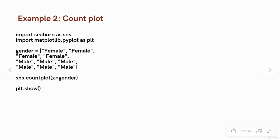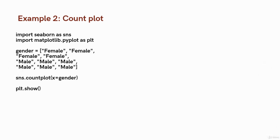If you want to produce a count plot — for example, to count a particular set of genders — make the necessary imports. Let's say our gender list has some females and some males. If you want to see how many people have female as a gender and how many have male, you use the count plot function: sns.countplot(x='gender'). This will tell you the number of males and females in the list. Simple.